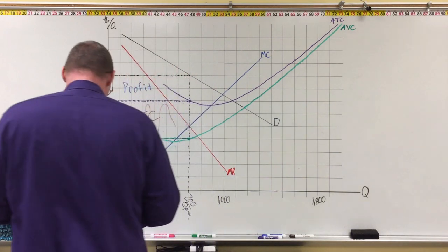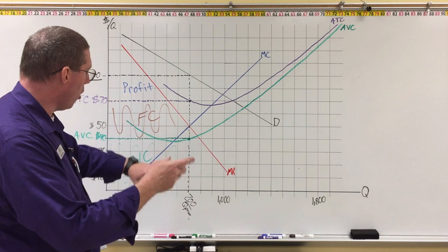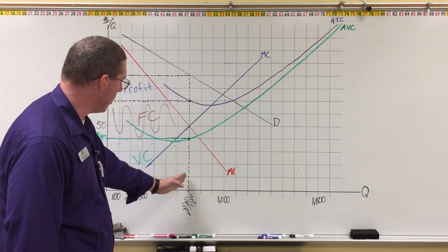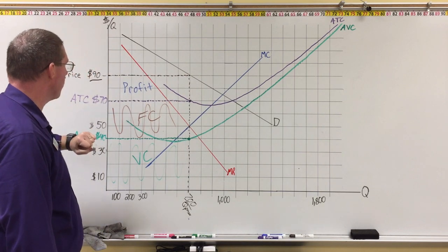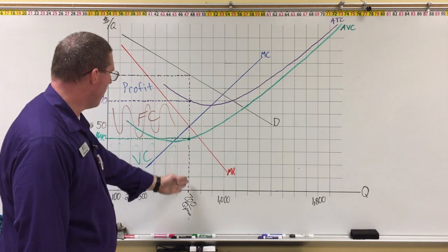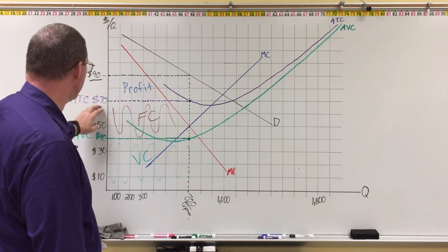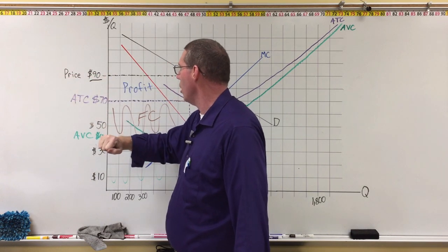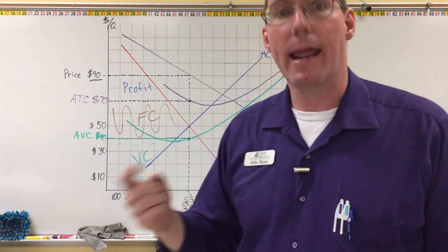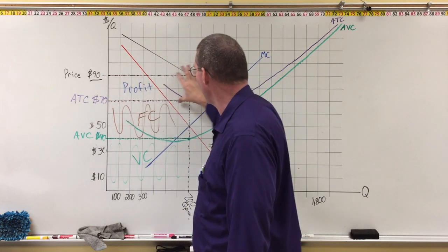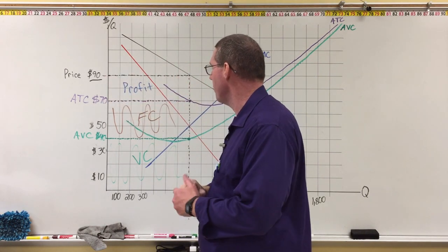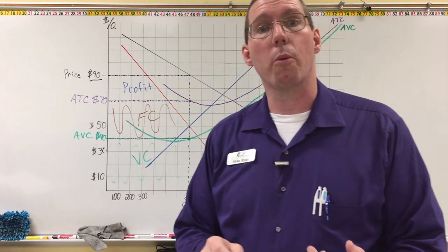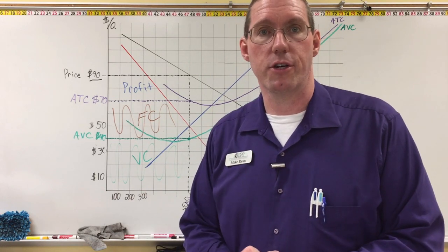When we look at this graph, we go through our procedure: first we find where marginal revenue equals marginal cost to identify the profit-maximizing quantity. Then we identify the price, which is $90. Then we identify the average variable cost, which is $40, and the average total cost, which is $70. Since price is higher than average total cost, we know this business is operating at a profit, and this rectangle here represents the profit rectangle.